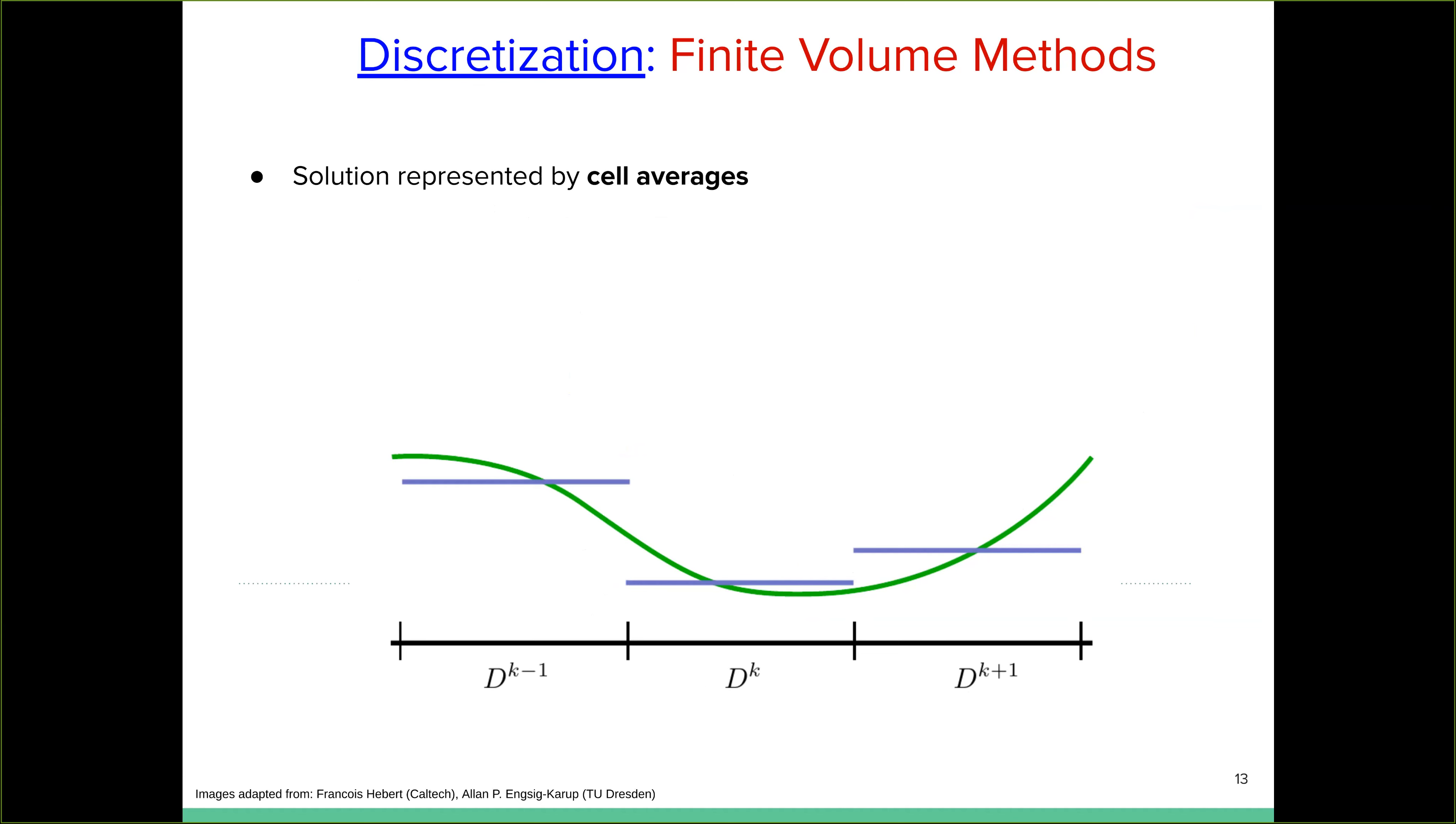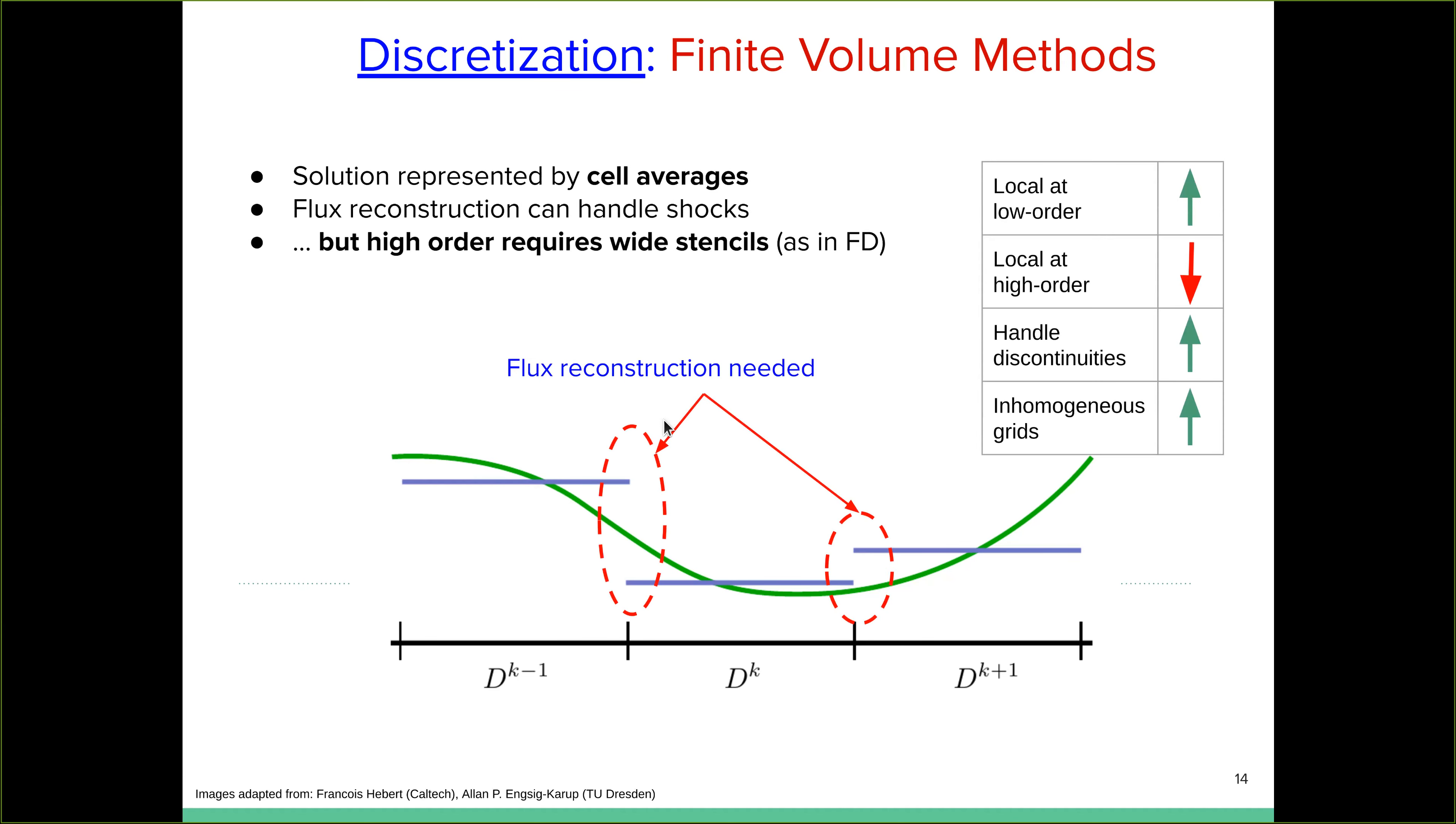Okay. Then another discretization scheme that is common in certain fields is that of finite volume methods. So there the solution is represented by cell averages. So here again is the domain in one dimension. These are the elements in the domain and the solution, the true solution is represented by the cell average in each cell. Right. So the transfer of information here requires the prescribing a numerical flux.